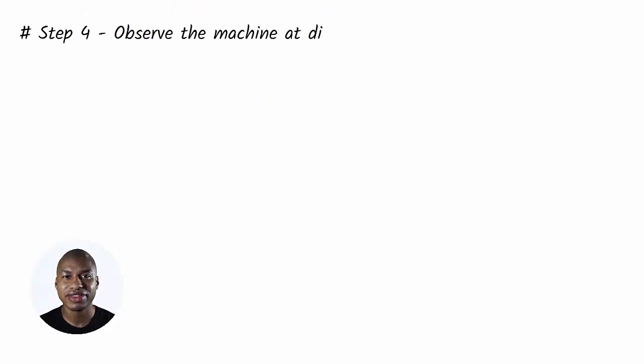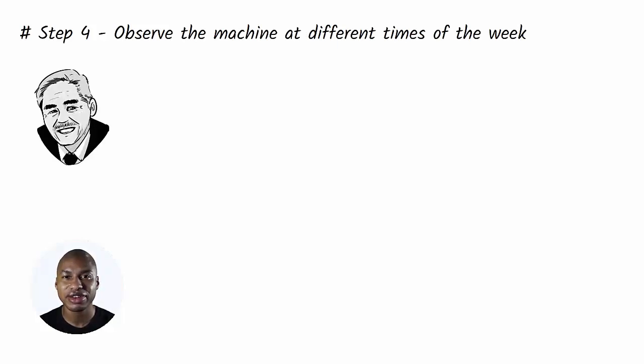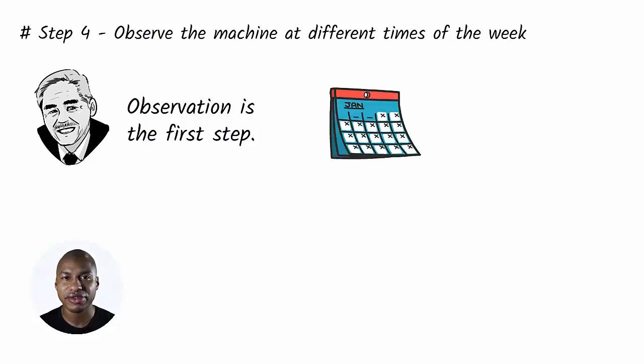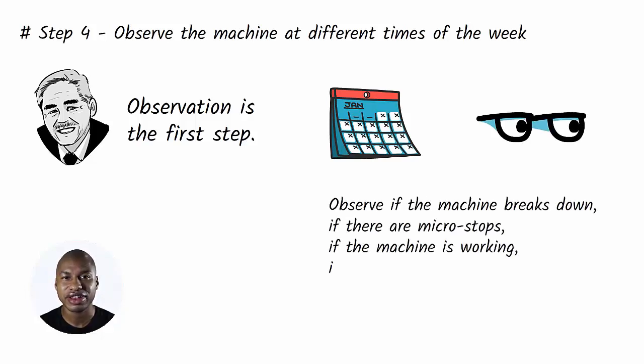Step 4. Observe the machine at different times of the week. Taiichi Ono strongly believed in observation as the first step of improvement. So, for a week or two, go and observe your chosen machines for one or two hours. See if the machine breaks down, if there are microstops, if the machine is working, if the machine is waiting for parts, etc. After these observations, check that they are congruent with the interview answers.